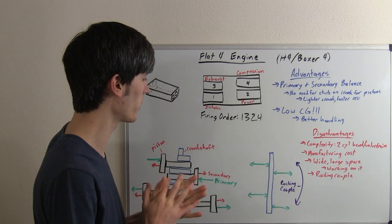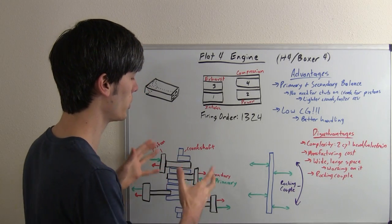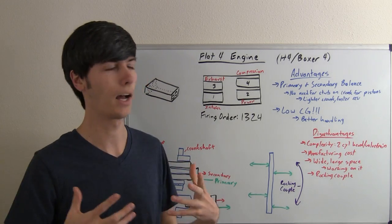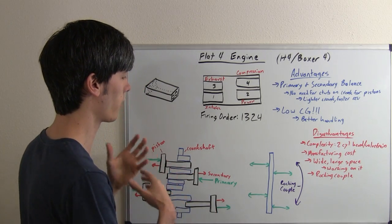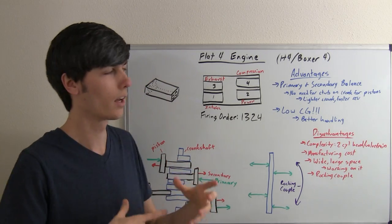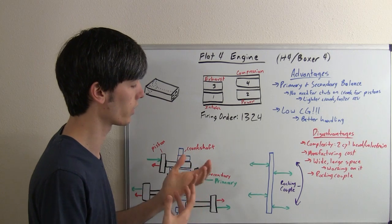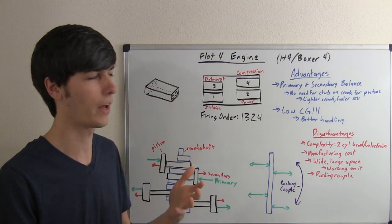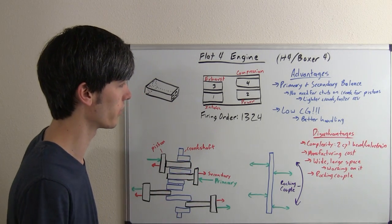Now you will still need counterweights for other movements in there, but basically you can use a lighter crank, and in doing so that means you're going to have less mass in that crank, so less rotational inertia, and it can rev up faster and be more responsive.